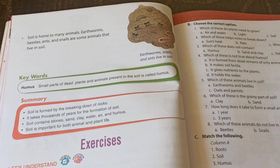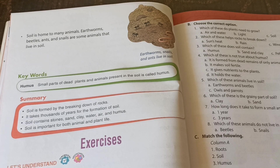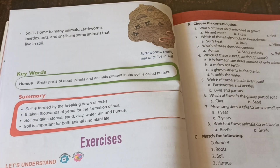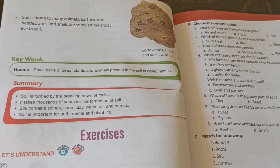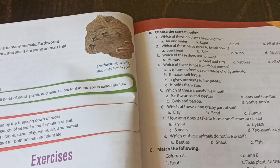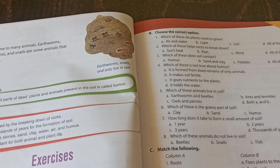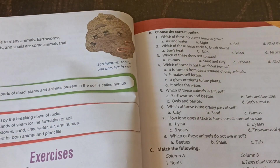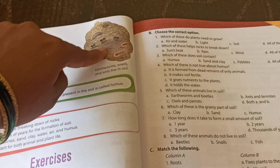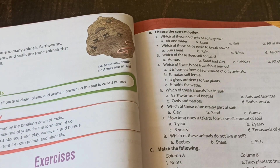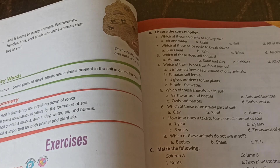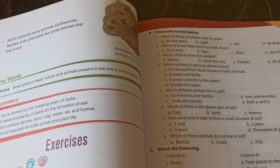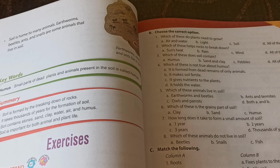Soil is home to many animals. Earthworms, beetles, ants, and snails are some animals that live in soil. Earthworms, snails, and ants live in soil, and they also help fertilize the soil. From this chapter, one important summary: soil is formed by the breaking down of rocks, and it takes thousands of years for the formation of soil.